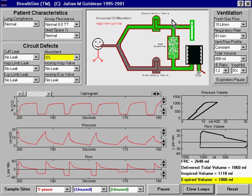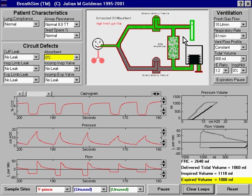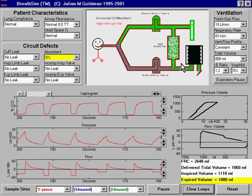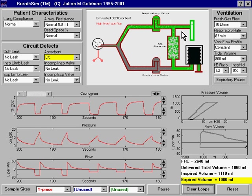The tidal volume that the patient receives is derived from two sources. One is the ventilator bellows excursion. And in this case, the ventilator bellows is set to deliver 800 milliliters. And the second source is the fresh gas flow.